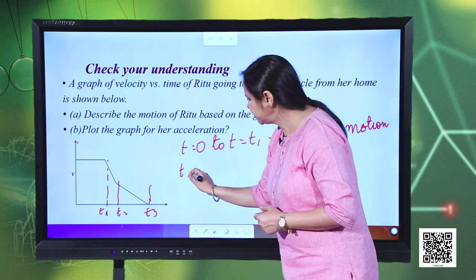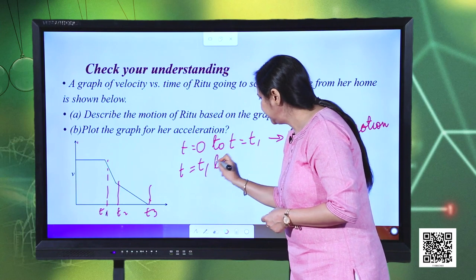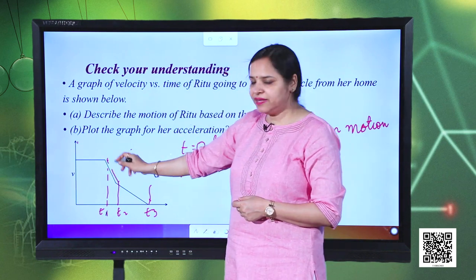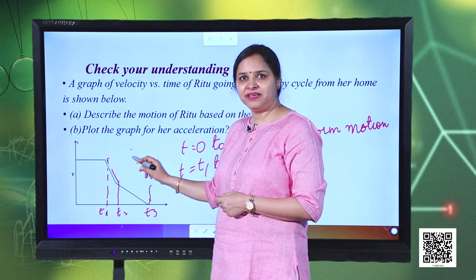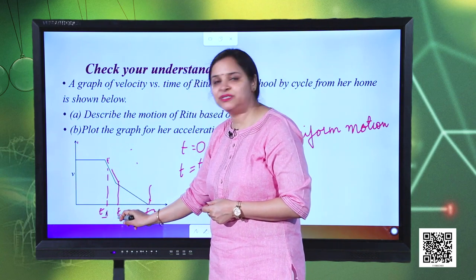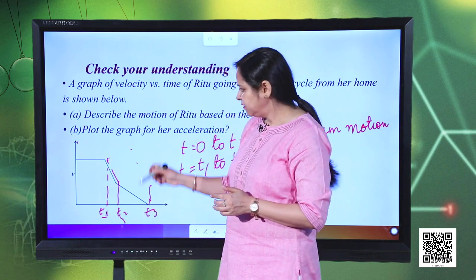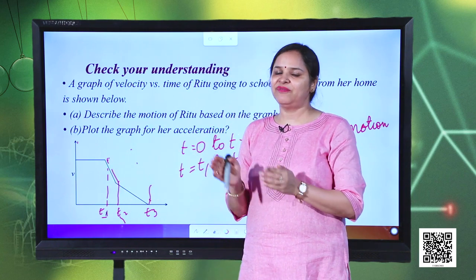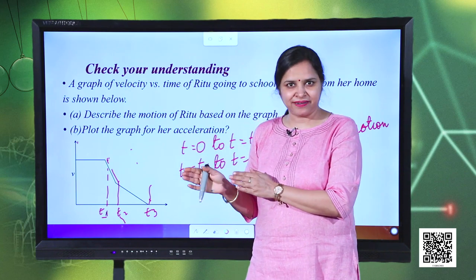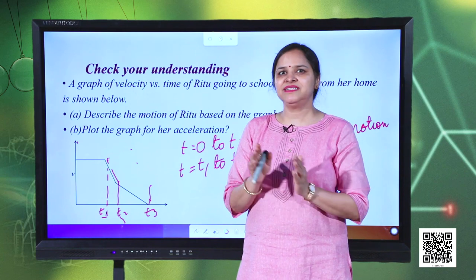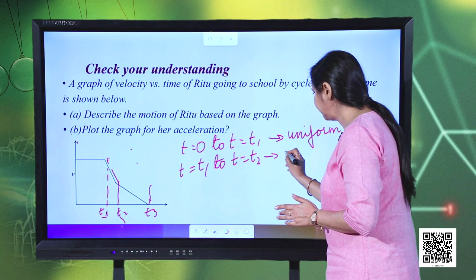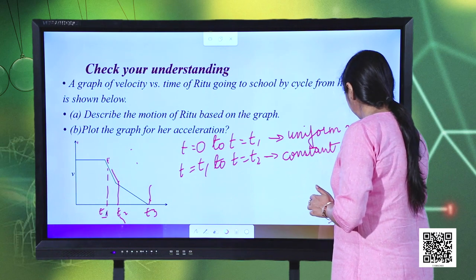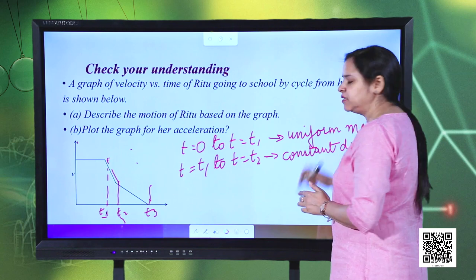Now let us look at the time duration t₁ to t₂. In this interval the velocity is decreasing. Since it is a straight line inclined to the time axis, this is a case of deceleration where velocity decreases at a uniform rate. So it represents constant deceleration during the time interval t₁ to t₂.